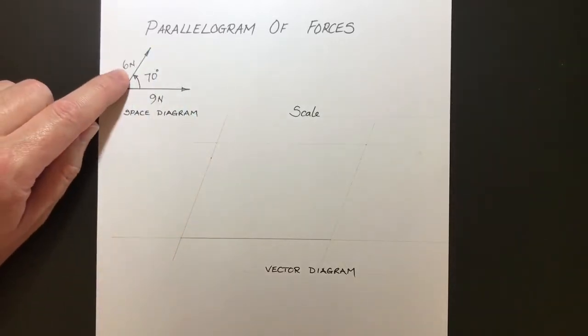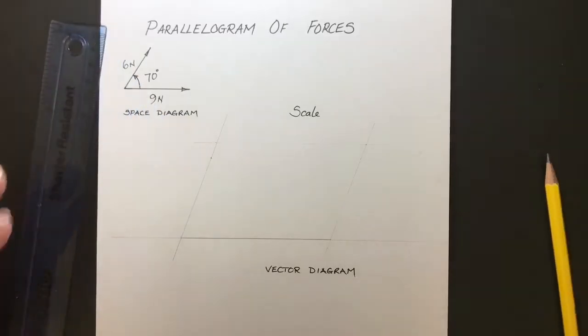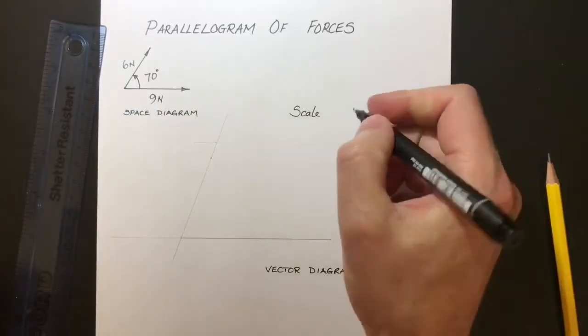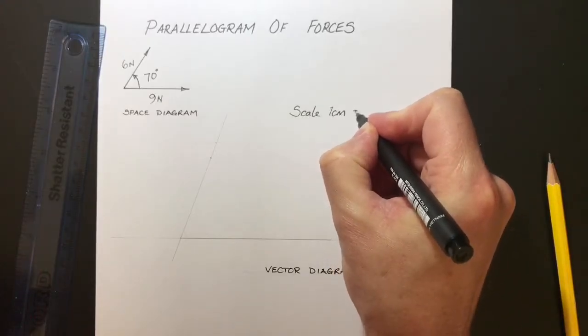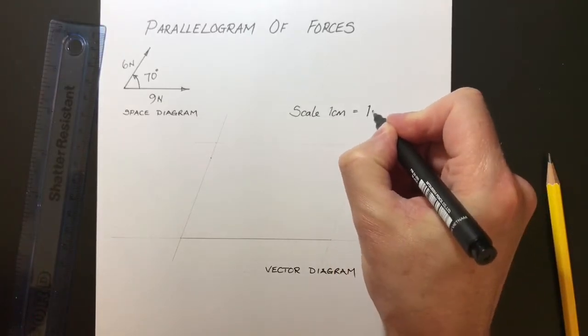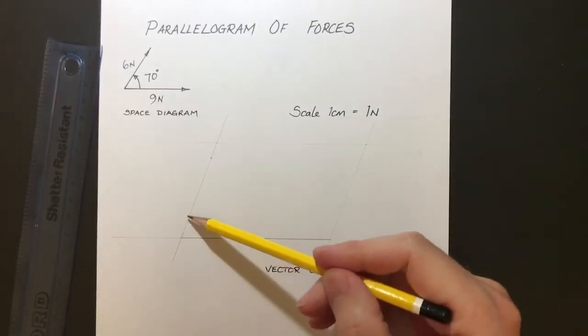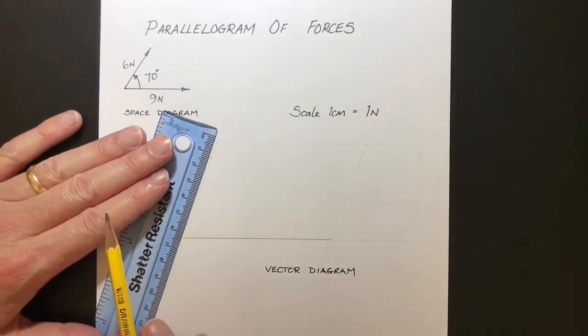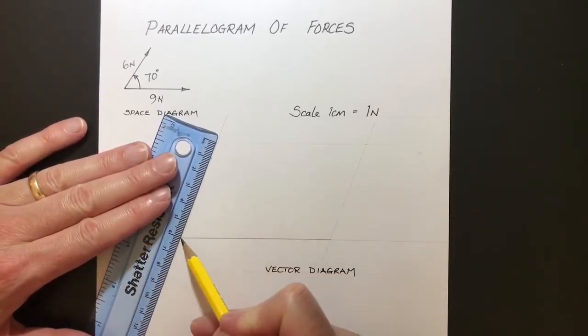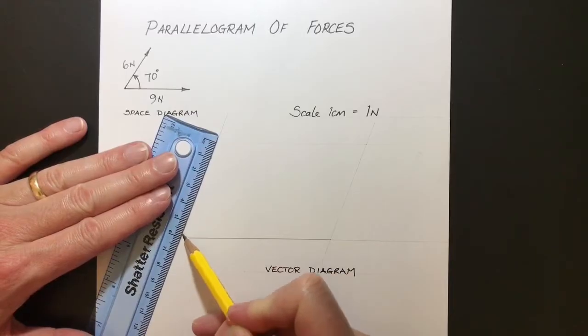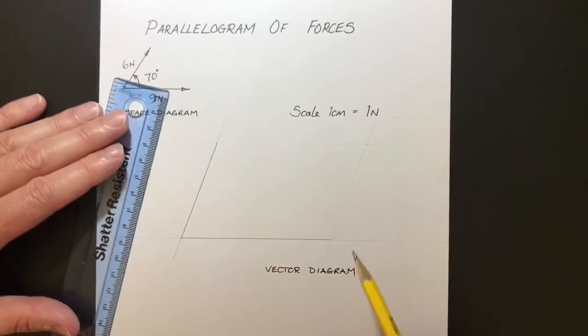Now the magnitude of this one is six Newtons. And we've said that the scale is going to be one centimeter equals one Newton. So the length of this line is therefore going to be six centimeters. So if I line that six up here, that's six up here. There we go. And I can draw my vector.